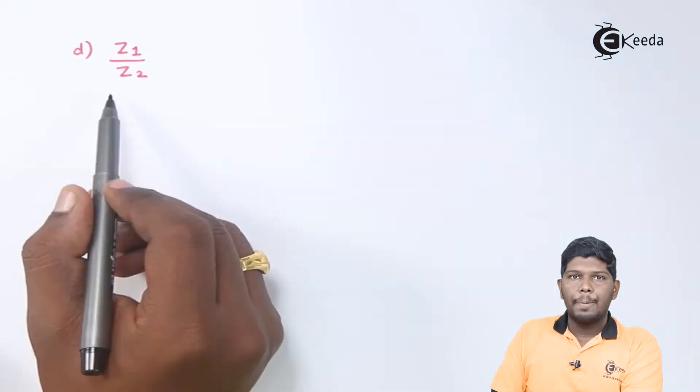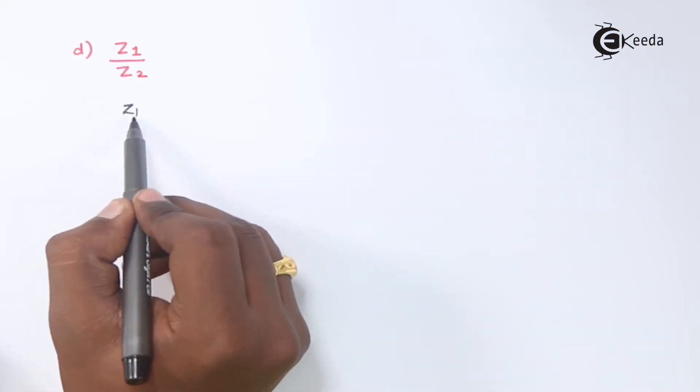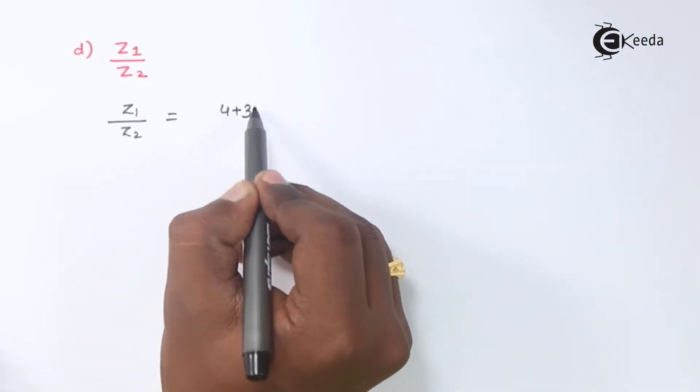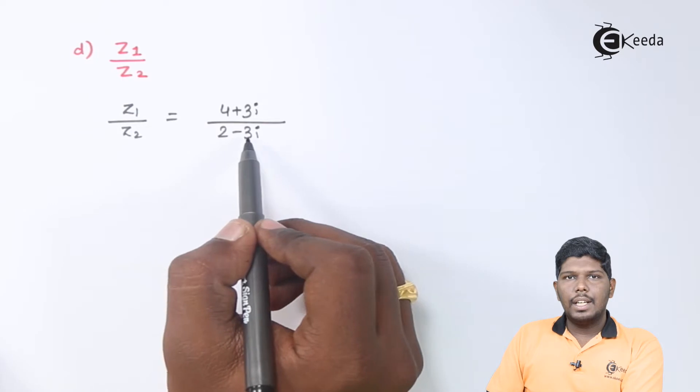Now, let us see the next problem. In fourth problem, they have asked you z1 upon z2. Remember, whenever we solve or divide complex numbers, we need to rationalize the denominator only in division process. So let us rationalize the denominator.